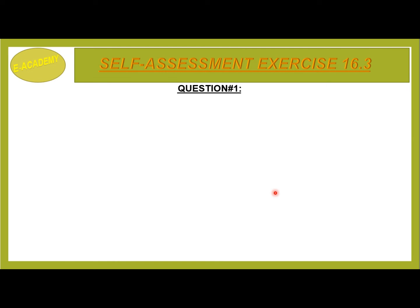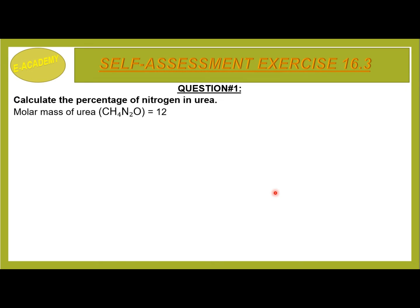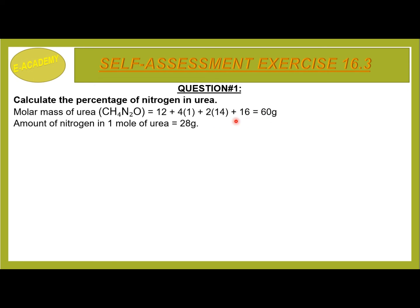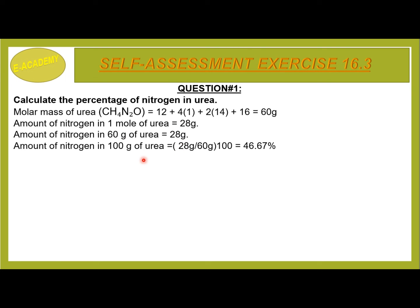Self-Assessment Exercise 16.3, Question No. 1: Calculate the percentage of nitrogen in urea. The molecular formula of urea is CH4N2O. Molar mass: carbon = 12, plus 4 × hydrogen (1) = 4, plus 2 × nitrogen (14) = 28, plus oxygen (16) = 60 grams per mole. Amount of nitrogen in one mole of urea is 2 × 14 = 28 grams. Percentage of nitrogen = (28 ÷ 60) × 100 = 46.67% nitrogen in urea.